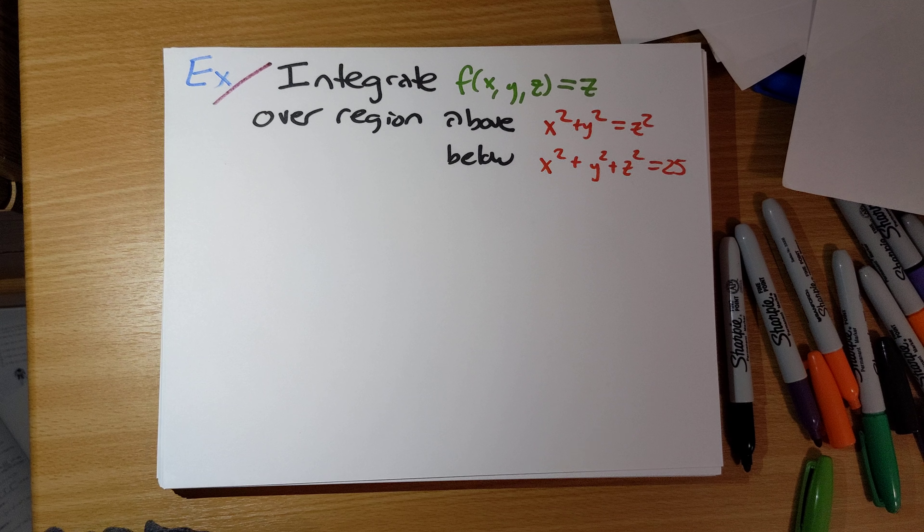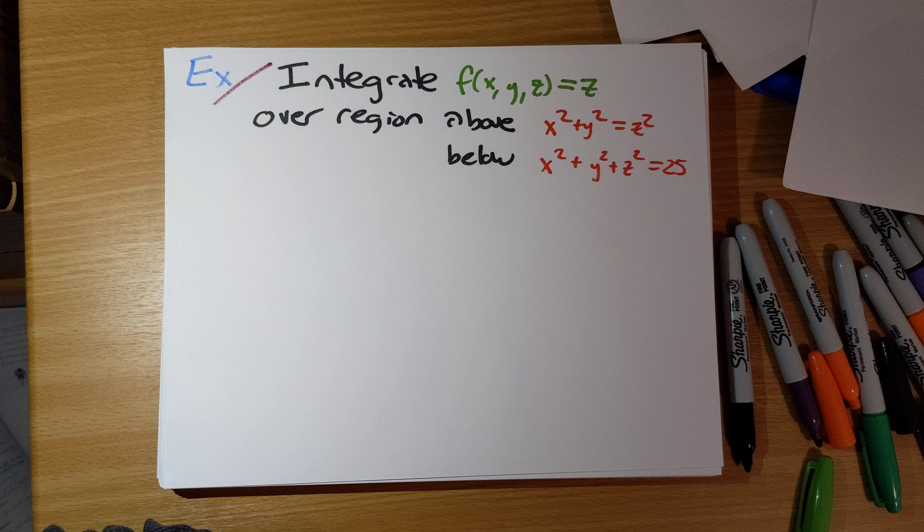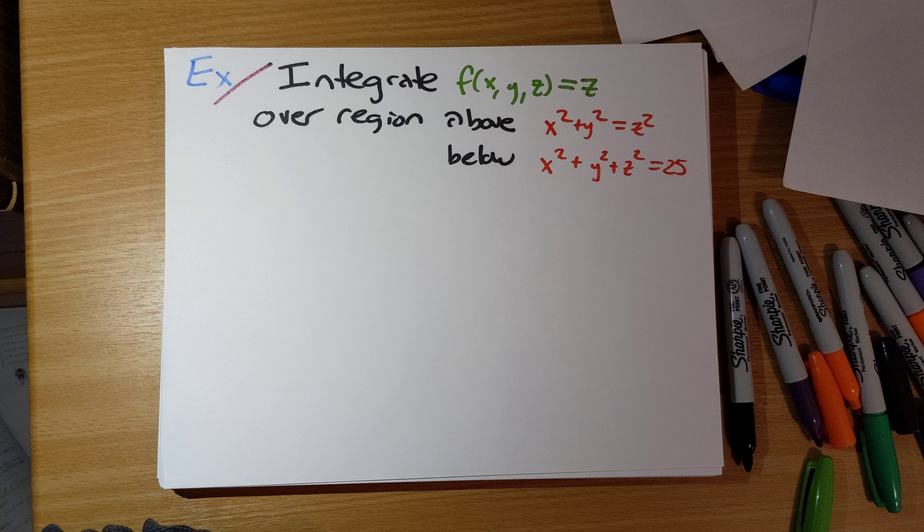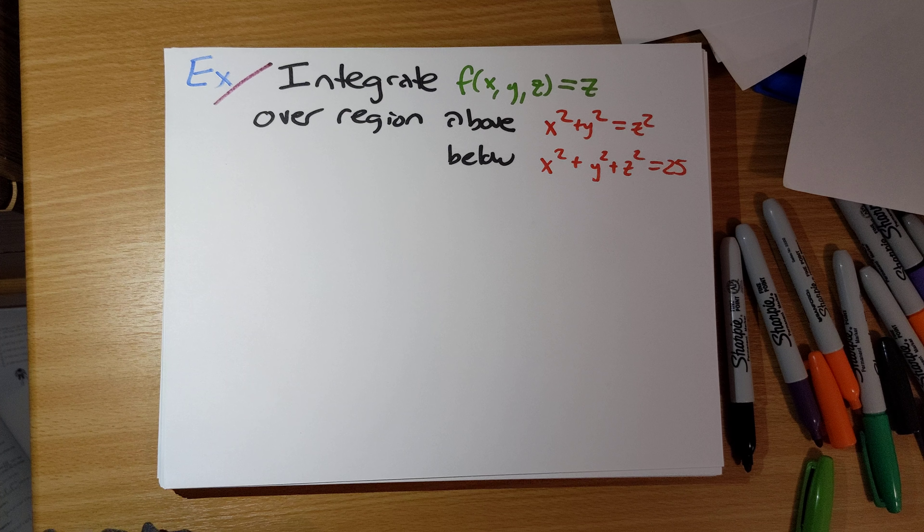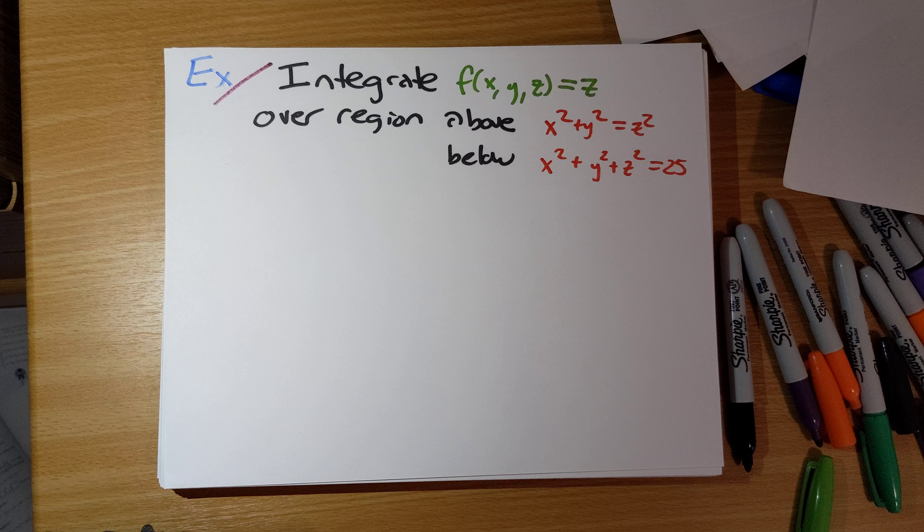Okay, let's take a look at this problem. Integrate f of x, y, z equals z over the region above x squared plus y squared equals z squared, below x squared plus y squared plus z squared equals 25.